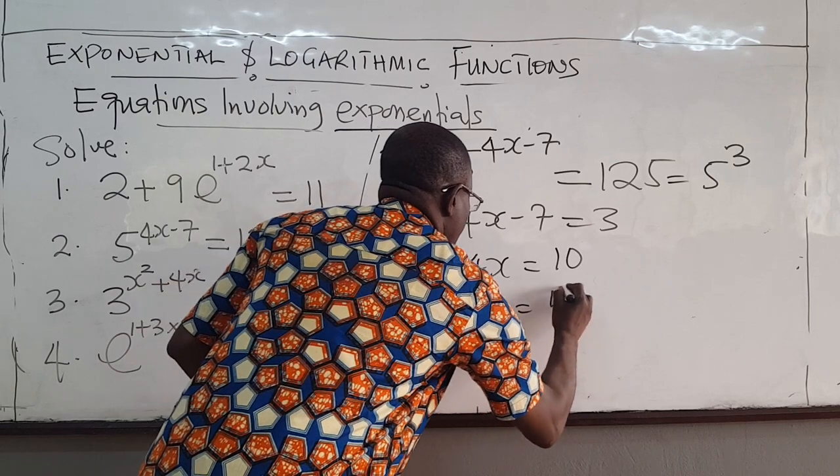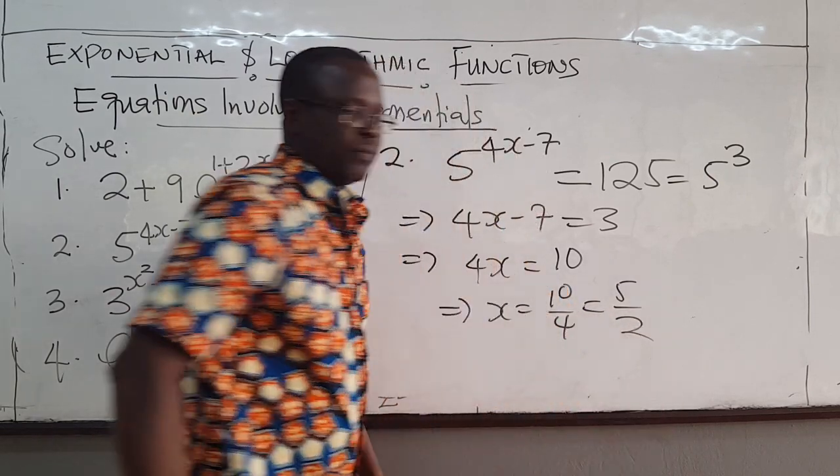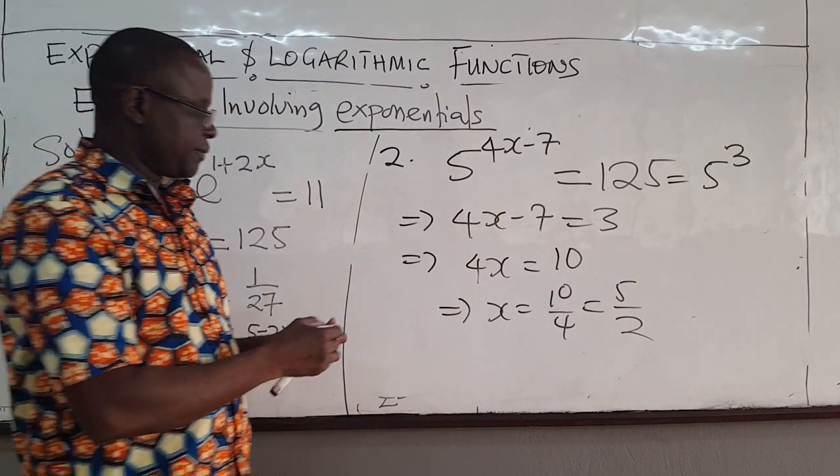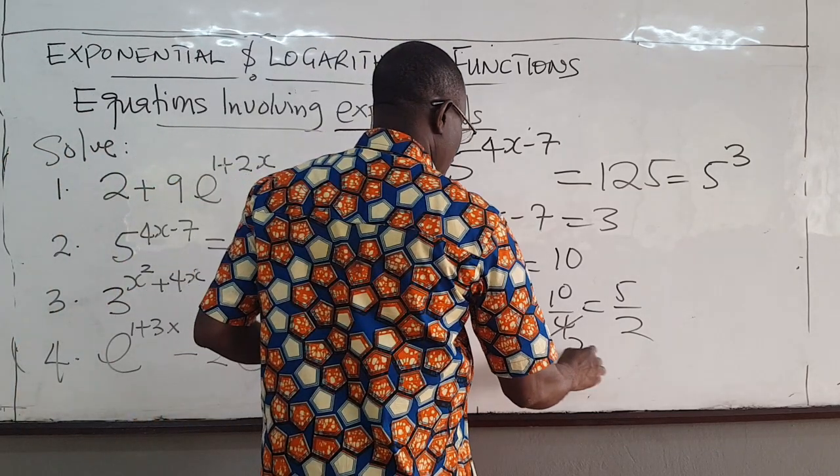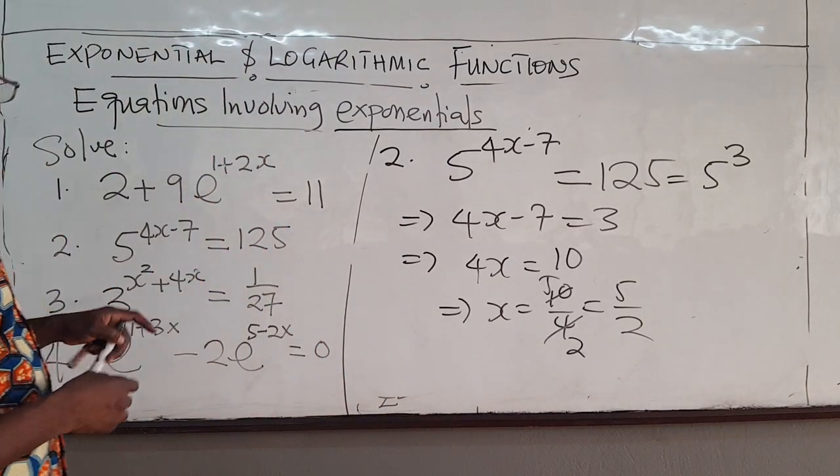So you solve for x. So 4x = 3 + 7, that is 10. Therefore, x is 10 over 4, that is 5 over 2. Question 2.